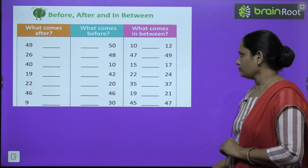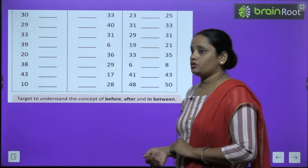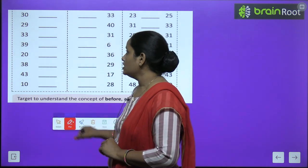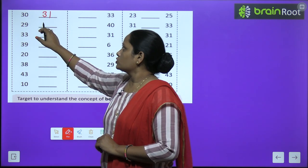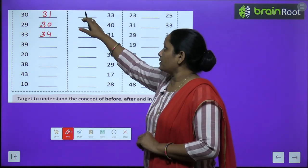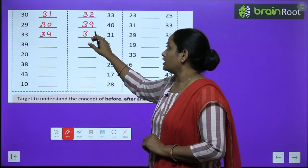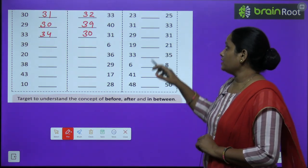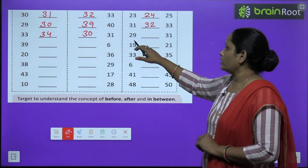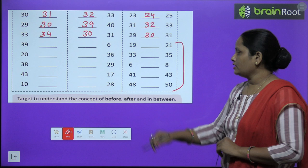Clear children? So before means pehle, after means baad mein, and between means beech mein. Toh chalie, yahan par bhi kuch questions hain, unhe bhi kar lete hain, aur kuch aapko homework karne hain. So 30 ke baad hai 31, 29 ke baad hai 30, 33 ke baad hai 34. Similarly 33 se pehle hai 32, 40 se pehle hai 39, 31 se pehle hai 30. Similarly 23 ke baad hai 24, 31 ke baad 32, aur 33, 29, 30, 31. So yeh bacha kuch, children, this is your homework.